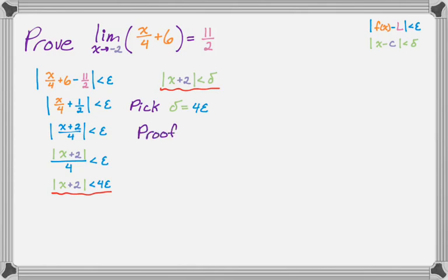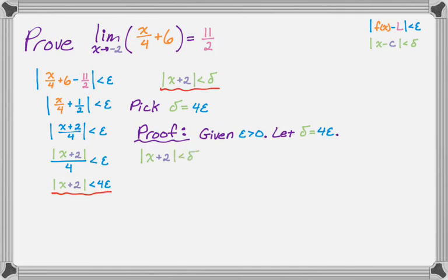So we're going to prove it. These proofs always start with: given epsilon greater than 0, let delta equal 4 epsilon like we found. Now I want to write the absolute value of x minus c is less than delta to start. So the absolute value of x plus 2 is less than delta, which implies that the absolute value of x plus 2 is less than 4 epsilon, because we said delta equals 4 epsilon.